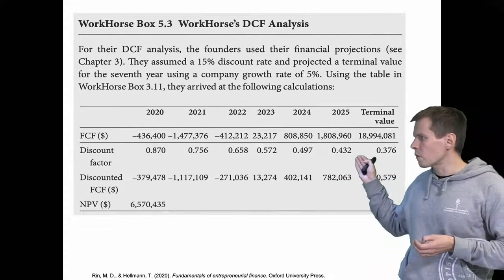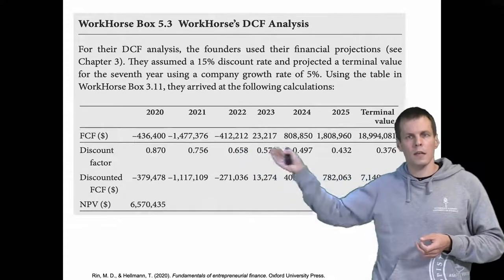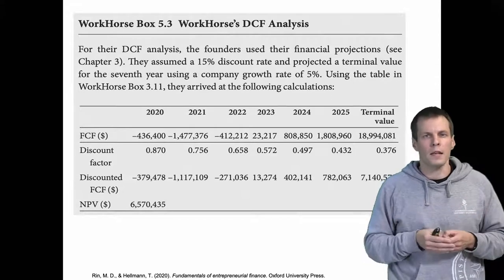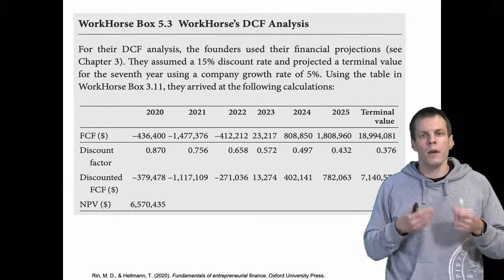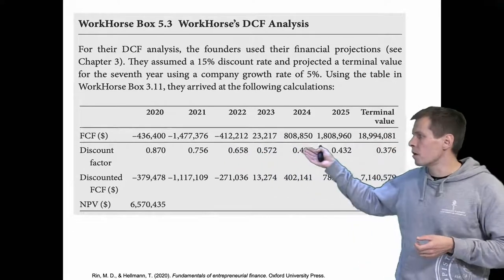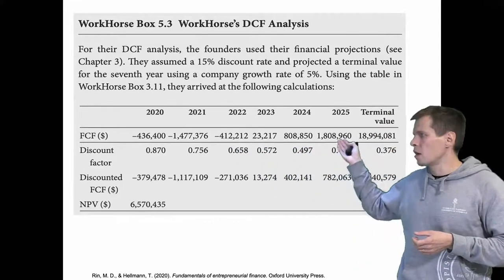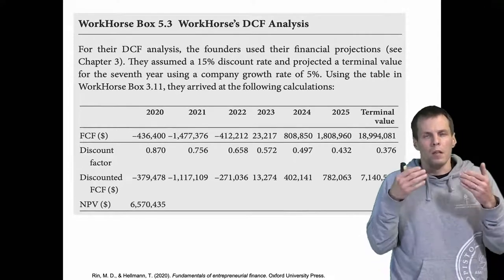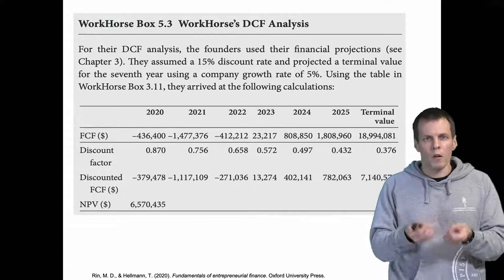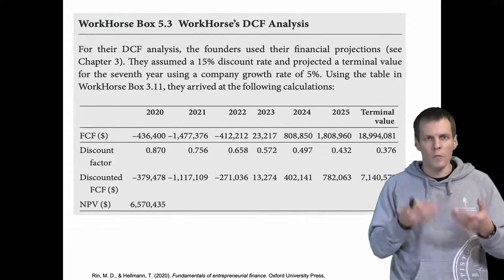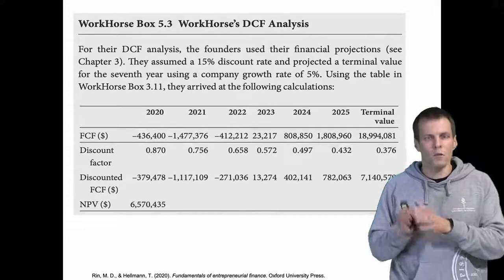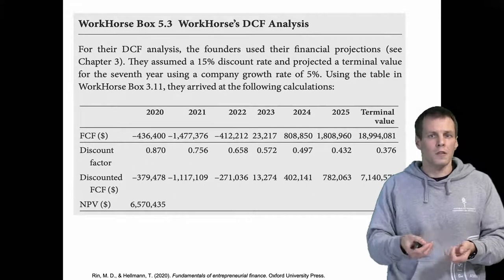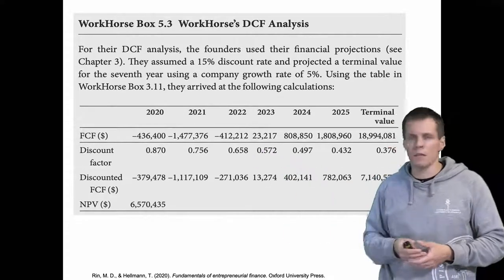First we need to understand what free cash flow is. This example comes from the Rinn and Helman book. They use a workhorse company as an example — the company is making losses initially, then turns profitable in its fourth year and starts to grow more profitable. This is a very common scenario: when you start a company you are not profitable initially because it takes time to acquire customers, and you have product development and other costs. So costs can be greater than revenue.